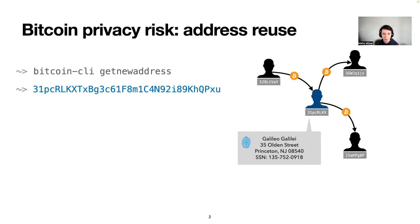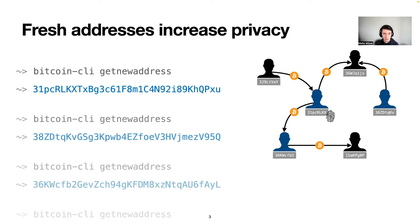Because it's so cheap to generate fresh addresses in cryptocurrencies, a common countermeasure is to generate a fresh address whenever possible. This way a lot of the transaction activity can be spread across a variety of different addresses, and if someone is able to associate one of those addresses with your real world identity, you still have a degree of privacy because not all of your transaction activity has been exposed.